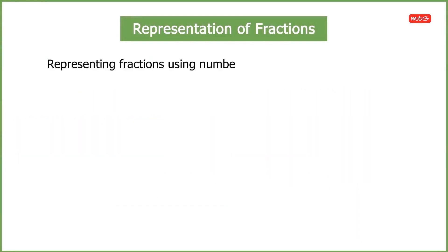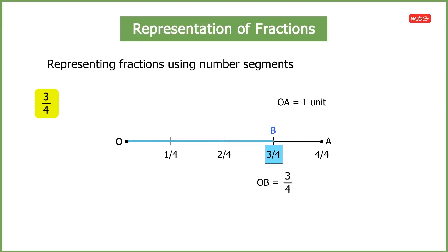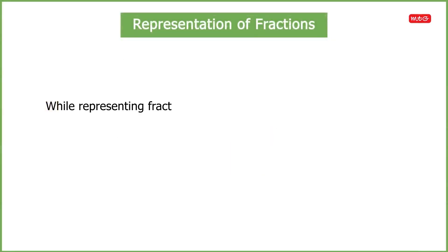Now let us see how to represent fractions using number segments. We take a line segment OA of one unit length. To represent 3 by 4, we divide OA into four equal segments — because the total number of parts is four — and mark each division as 1, 2, 3, and 4. By marking point B at three, OB represents 3 by 4 of OA. Remember: when representing fractions, the whole should always be divided into equal parts.